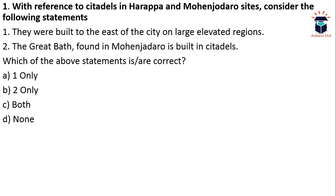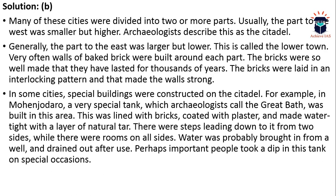The first question is: With reference to citadels in Harappa and Mohenjo-daro sites, consider the following statements. First, they were built to the east of the city on large elevated regions. Second, the Great Bath found in Mohenjo-daro is built in the citadel. Which of the above statements is/are correct? Options are given before you — you can pause the video and mark your answer.